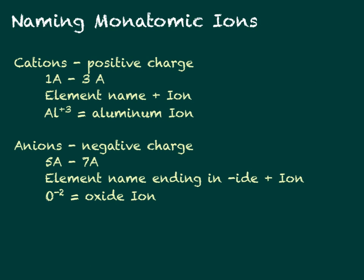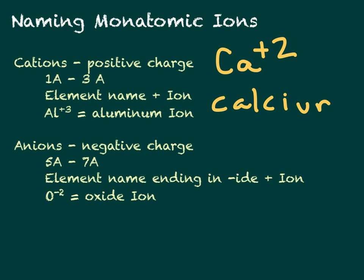We name ions differently depending on whether they are cations or anions. Cations have a positive charge — these are elements in Groups 1A through 3A. To name these ions, it's just the element name plus the word ion. For example, Al³⁺ is aluminum ion, and Ca²⁺ is calcium ion. We're not changing the name at all.